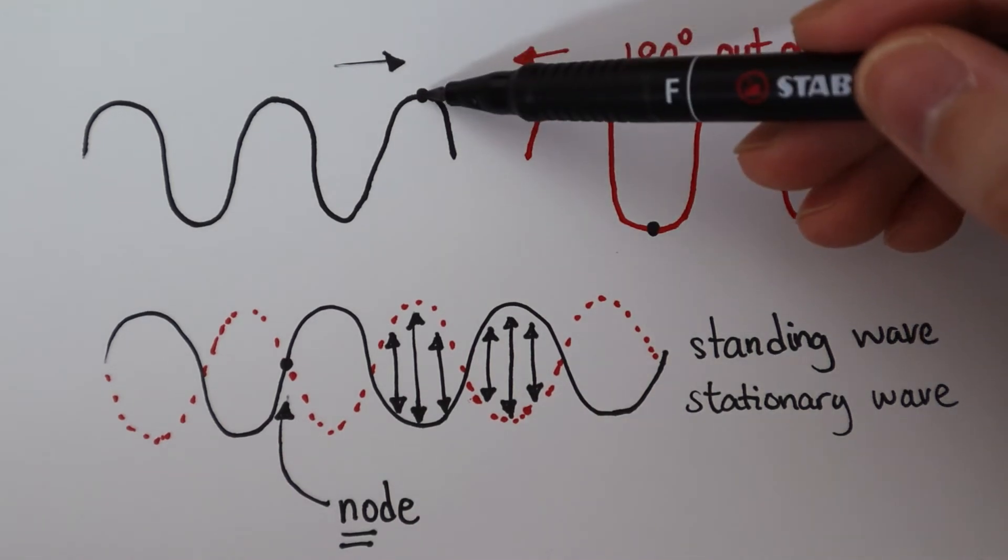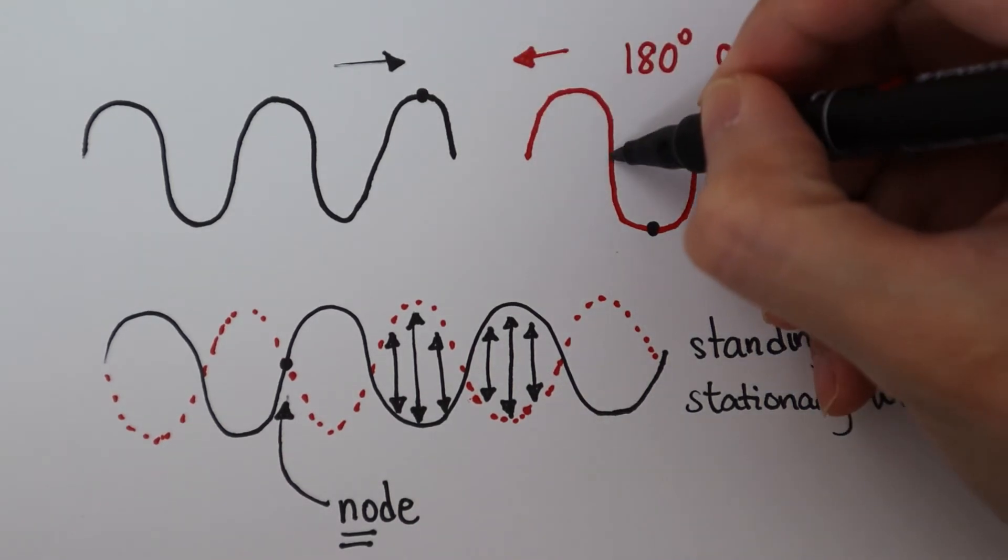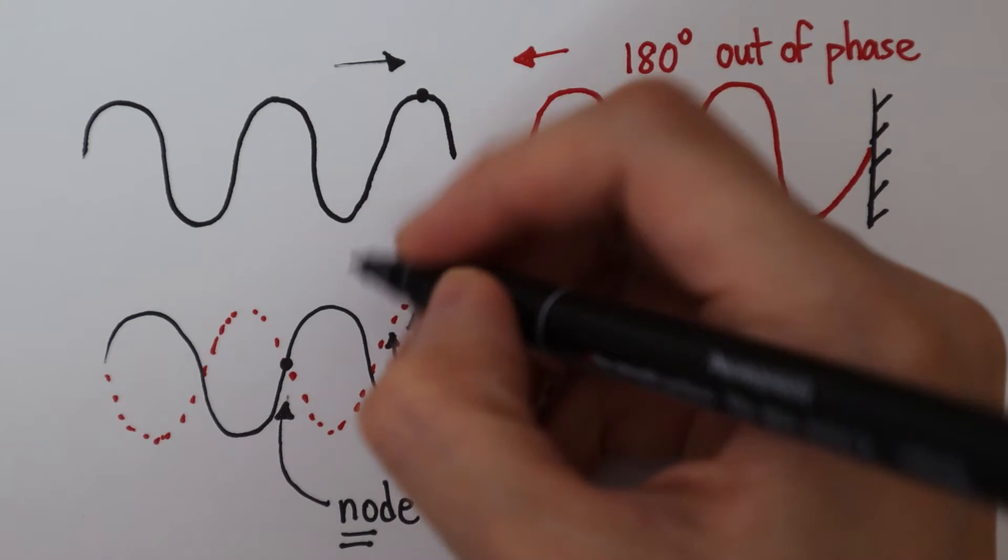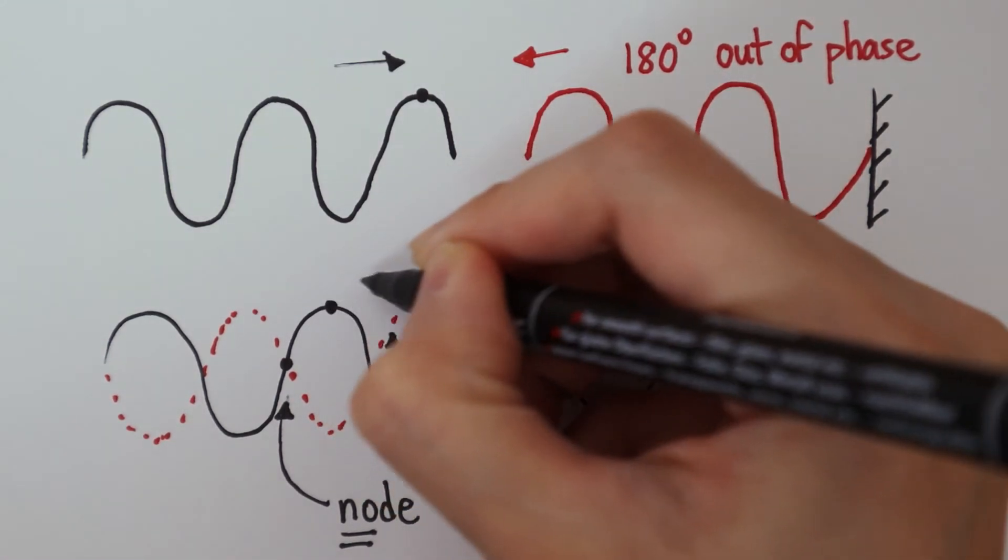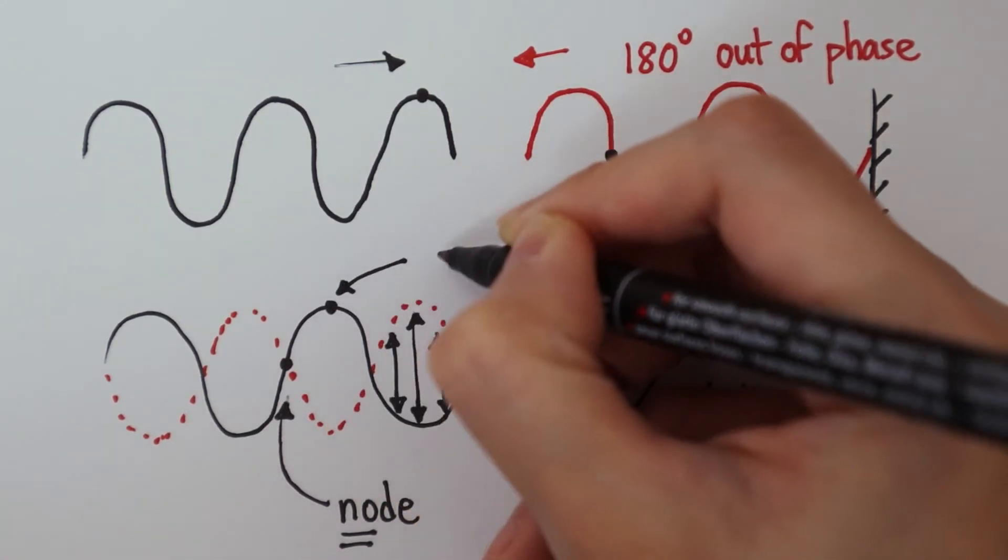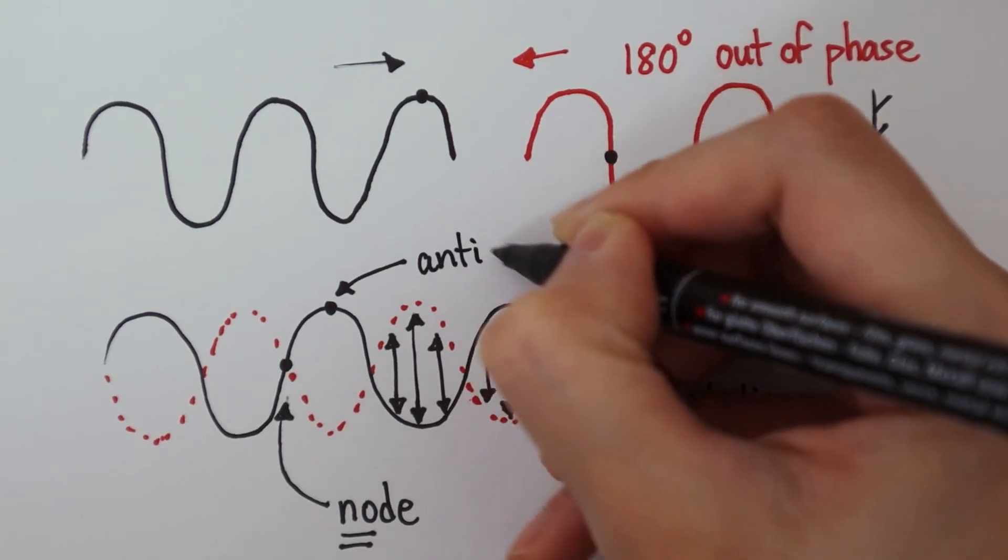When maximum displacement interferes with a point with zero displacement, it produces an anti-node in the resultant wave. There is intense disturbance here.